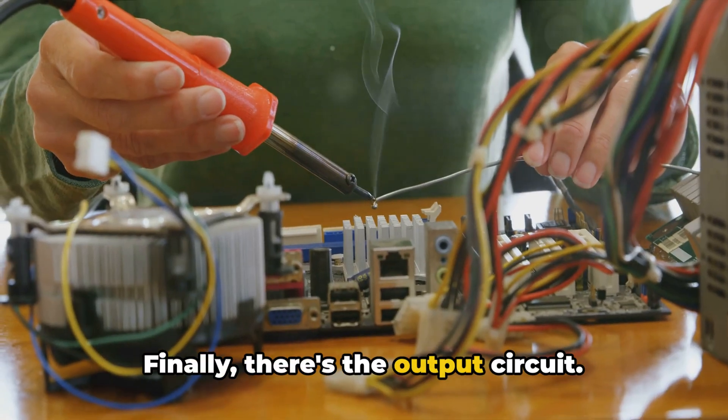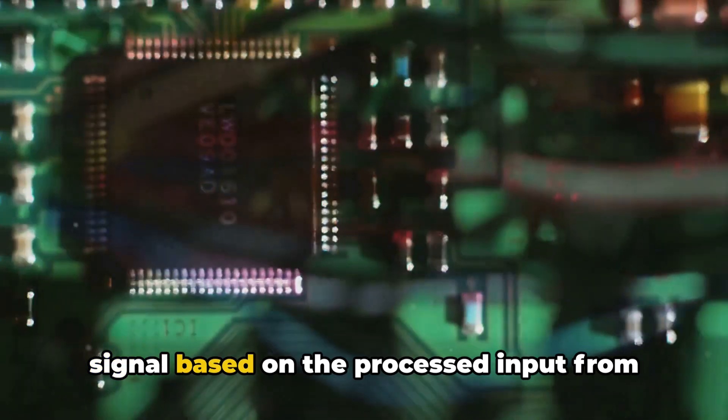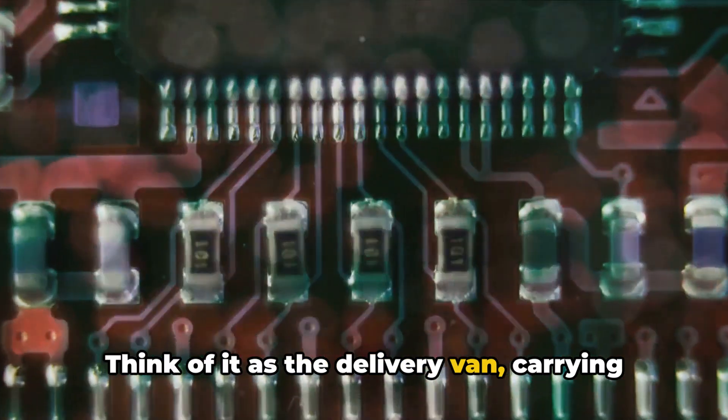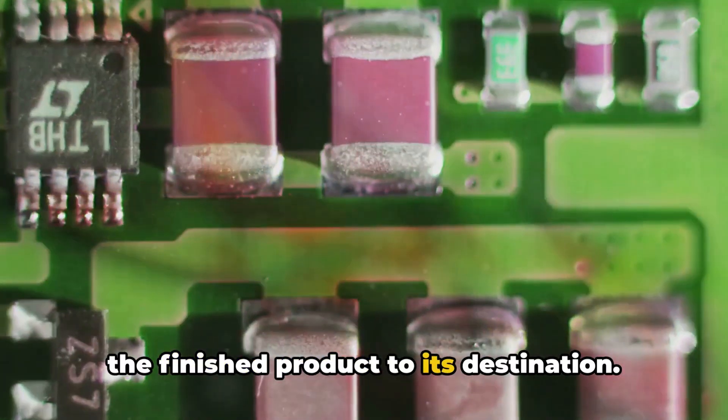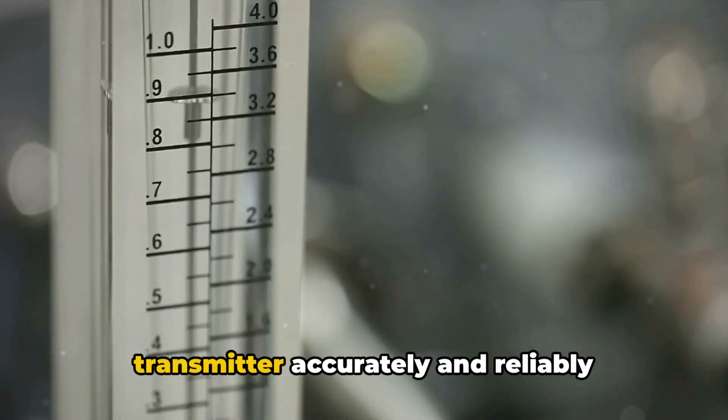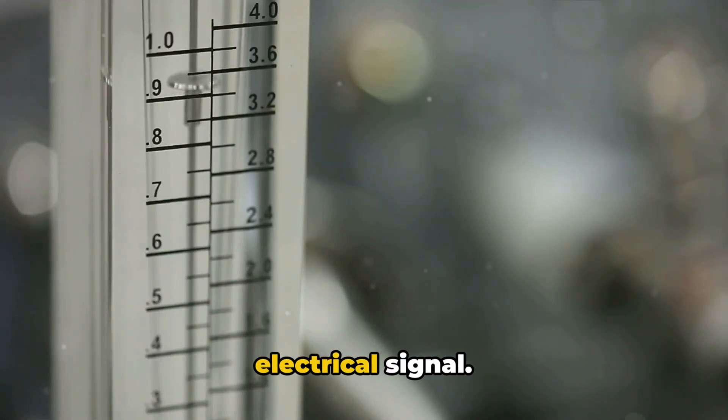Finally, there's the output circuit. This component generates the 4-20mA signal based on the processed input from the signal conditioning circuitry. Think of it as the delivery van, carrying the finished product to its destination. Through these components, the 4-20mA transmitter accurately and reliably transforms a physical parameter into an electrical signal.